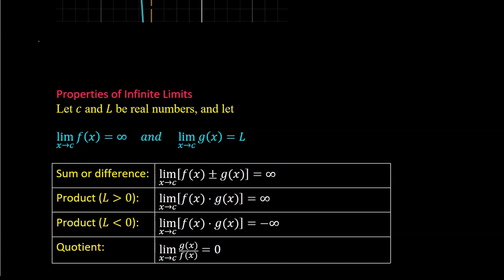For products: if the limit of g(x) is a positive number, then taking an infinite function and multiplying it by a positive limit function gives a limit of positive infinity. But if you multiply an infinite function by a negative limit function, you get negative infinity. For the quotient: if you take a number function and divide it by an infinity function, the limit is going to be zero.